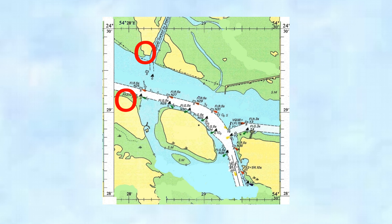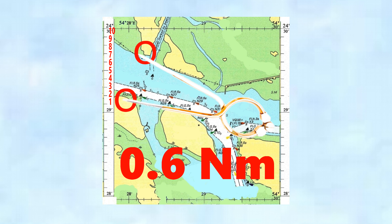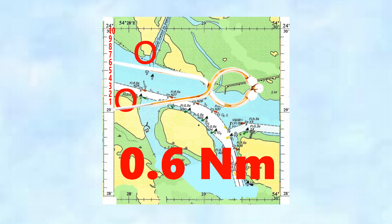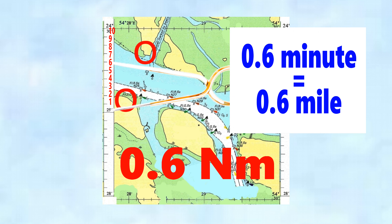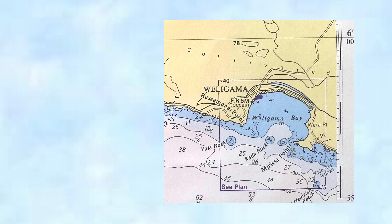Let's put it into practical use. What's the distance between these two points of land? We put the dividers on there and bring them round to the latitude scale. You can see that's 0.6 — 0.6 of a minute, which is also 0.6 of a nautical mile. Really nice and easy.